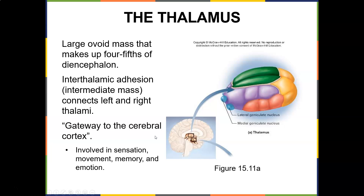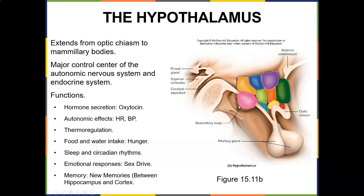The thalamus is basically a gateway to the cerebral cortex — I call it the air traffic control or the router. It's involved in sensation, movement, memory, and emotion. All stimuli come to the thalamus, which directs them to the appropriate area of the cerebral cortex. It's like air traffic control: all the planes are landing, and the controller tells you which gate to go to and when to take off.